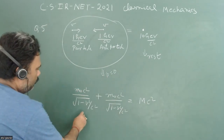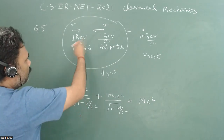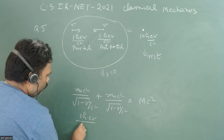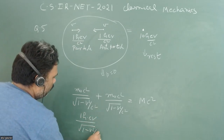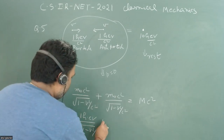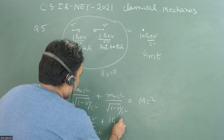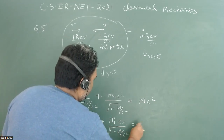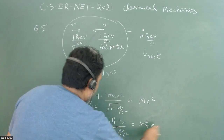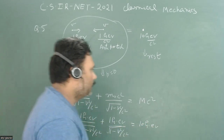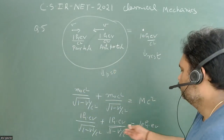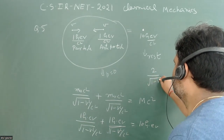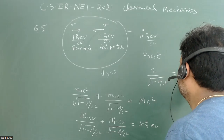Substituting m₀ = 1 GeV/c², the c² cancels, giving 1 GeV / √(1 - v²/c²) plus 1 GeV / √(1 - v²/c²) equals 10 GeV. This simplifies to 2 / √(1 - v²/c²) = 10.